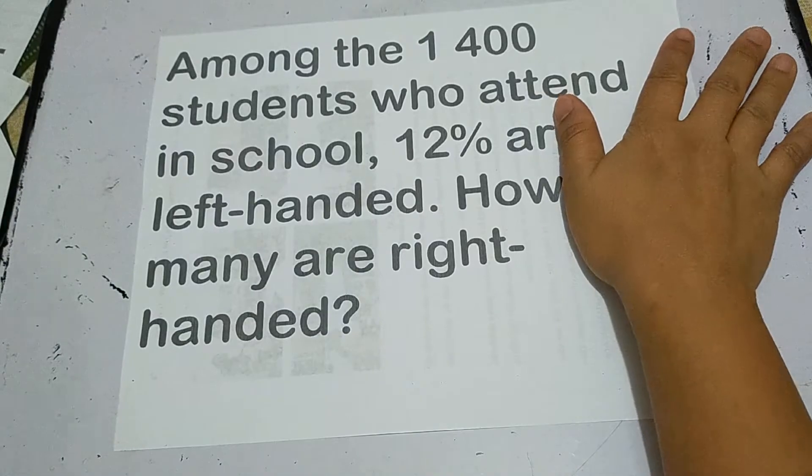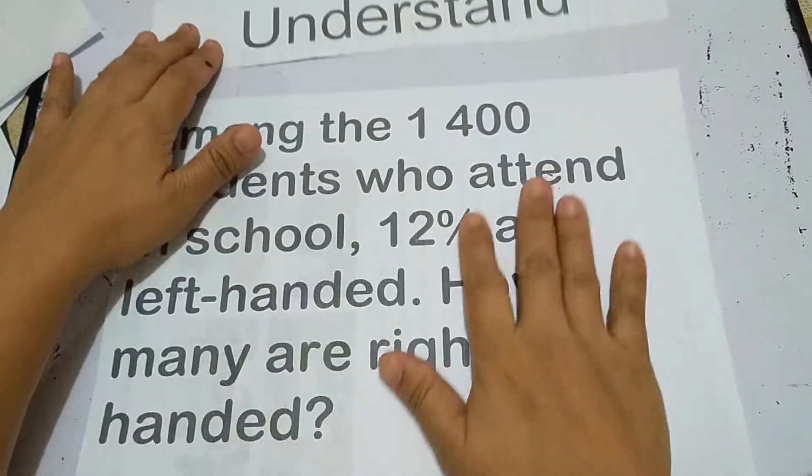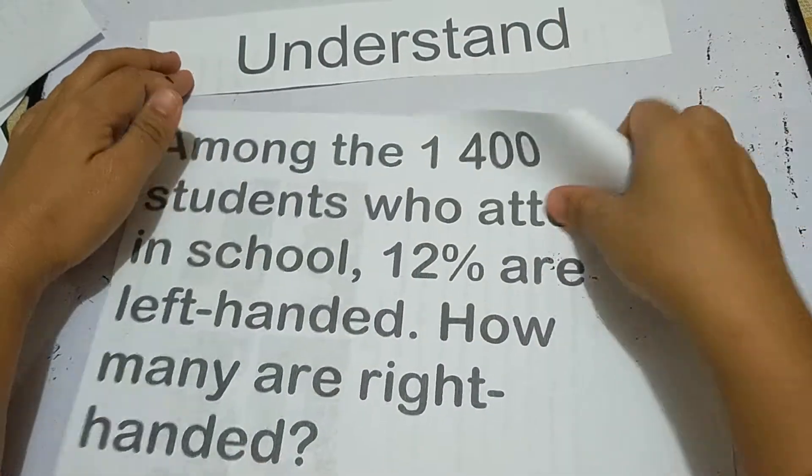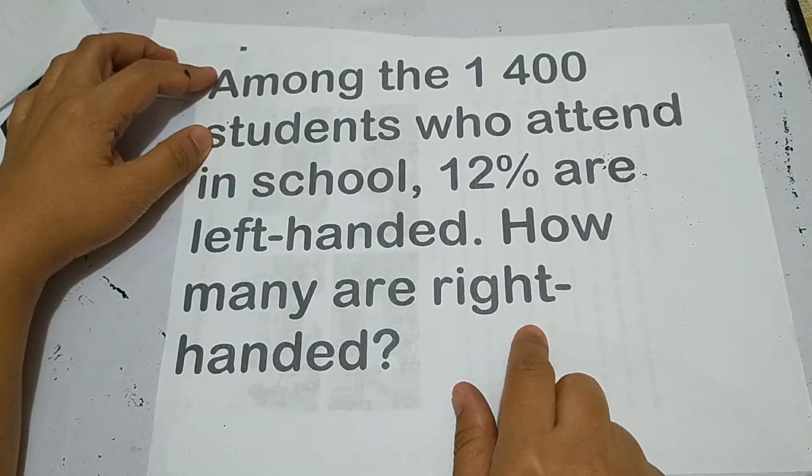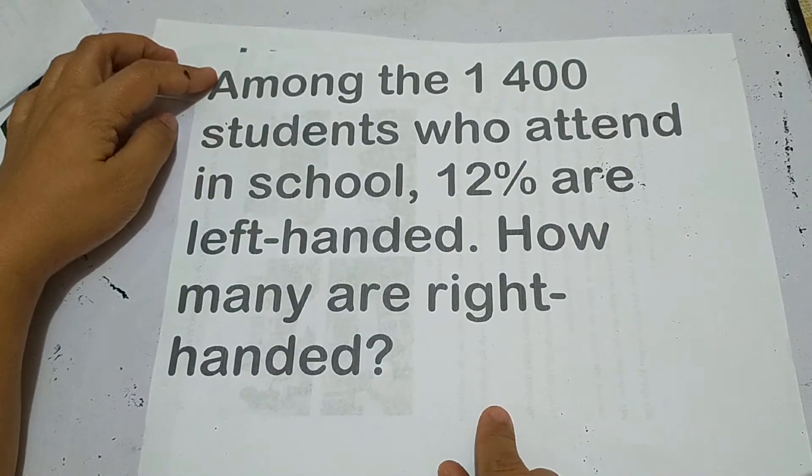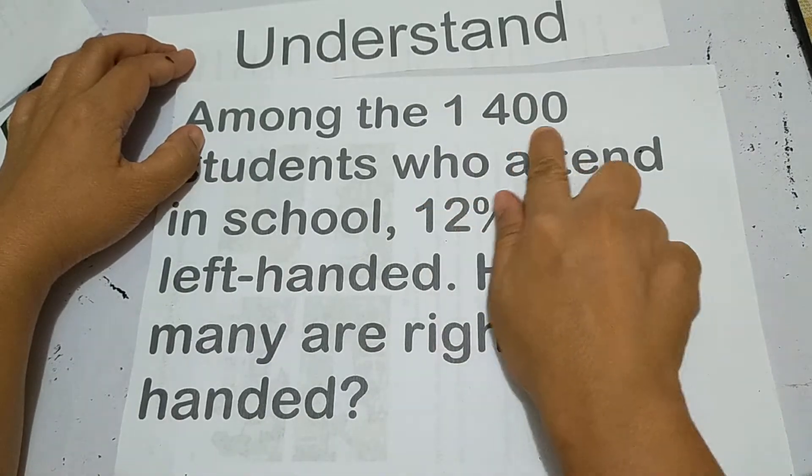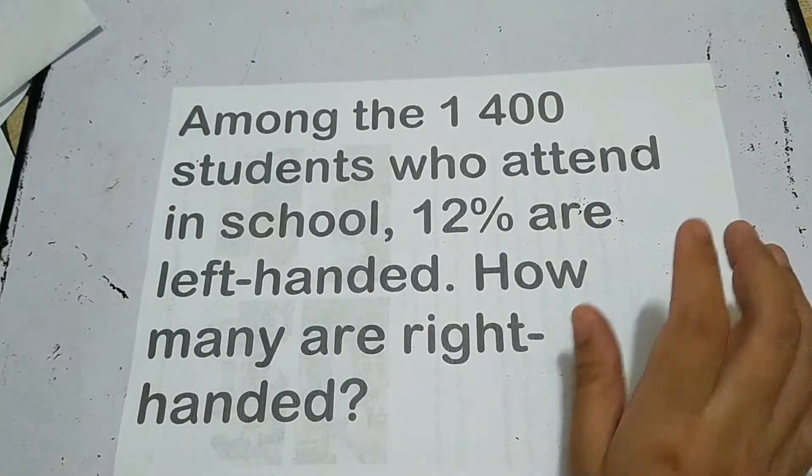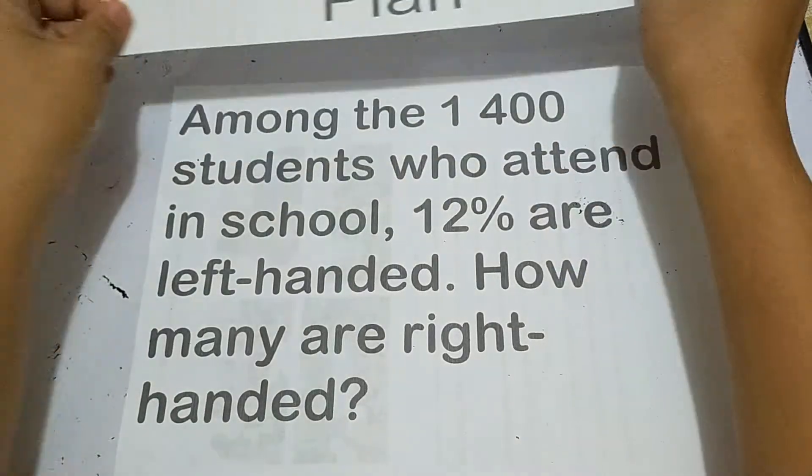Let's use the four-step plan. Under understand, what is asked? The number of right-handed students. What are given? 1,400 and 12%.